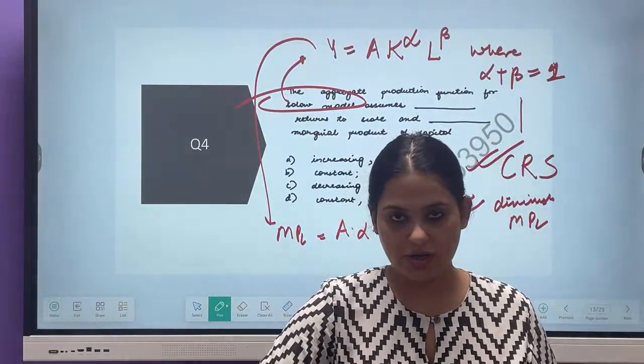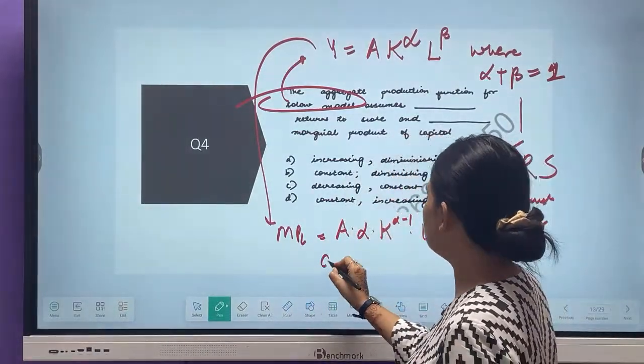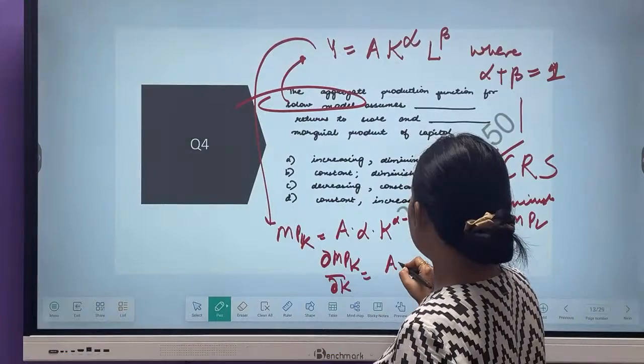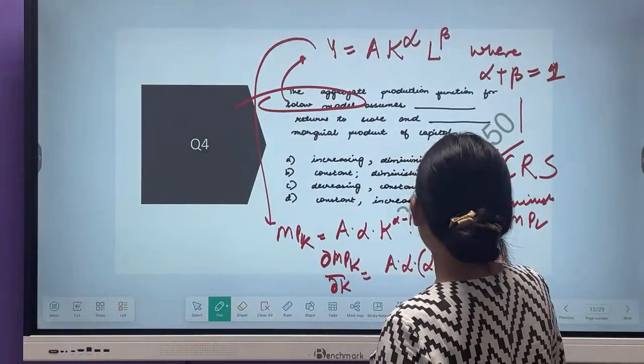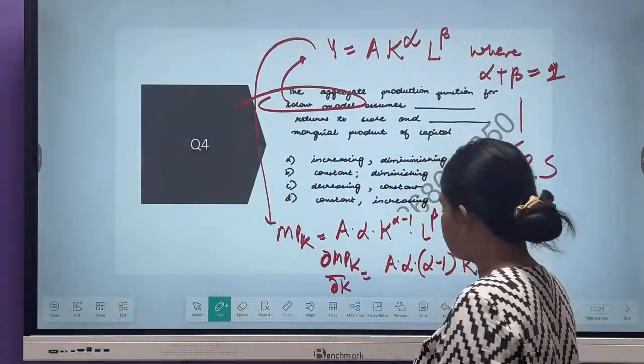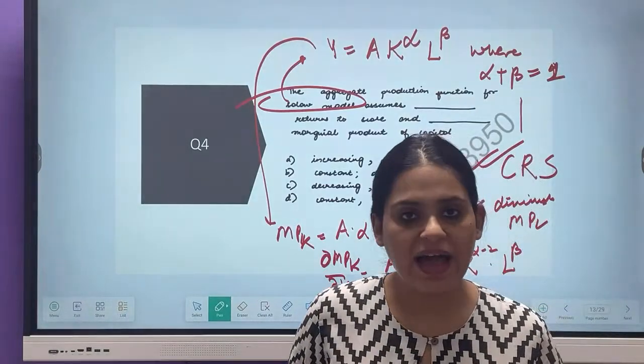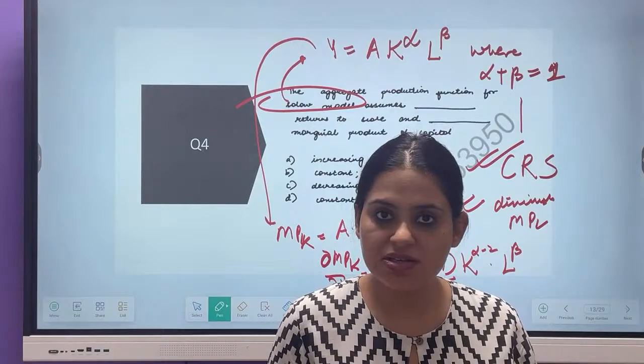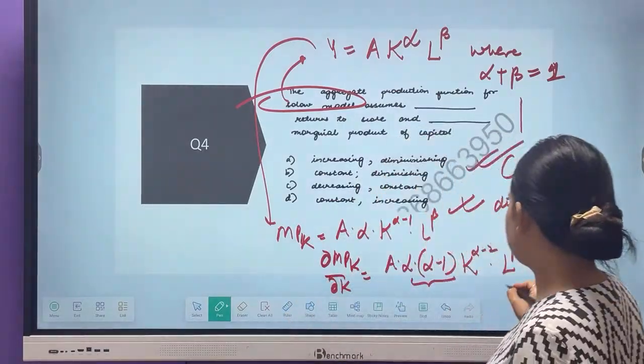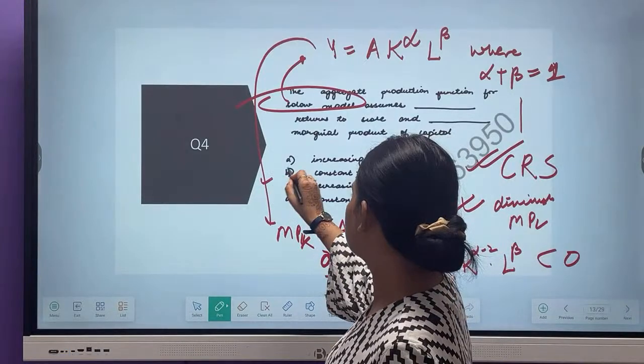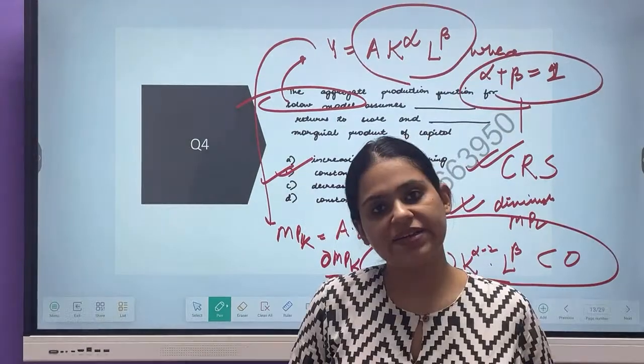You can also show this. Just find out the marginal product of capital. It will be A alpha K to the power alpha minus 1, L to the power beta. This is the marginal product of capital. To check if this is diminishing or not, differentiate it with respect to K again. You will get A alpha times alpha minus 1, K to the power alpha minus 2, L to the power beta. You see here you are getting alpha minus 1. But alpha is less than 1, so alpha minus 1 will be negative. So it is diminishing. Answer is B: constant returns to scale but diminishing marginal product.